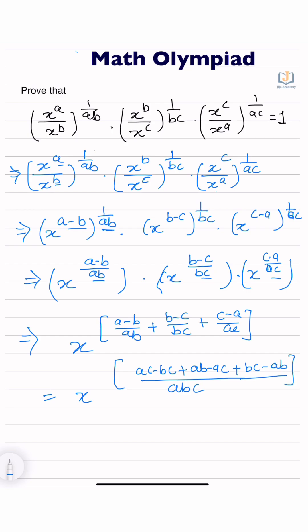So here x to the power 0 upon abc. Since x to the power 0 equals 1, the entire expression equals 1.